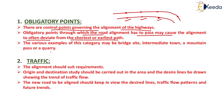Various examples of this category may be a bridge site, intermediate town, a mountain pass, or a quarry. In a particular alignment, we need to provide the major control points or obligatory points at the location of a particular bridge, any intermediate town, a mountain pass, or a quarry.